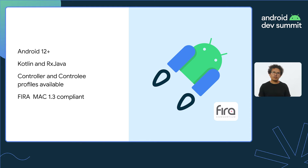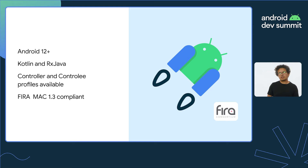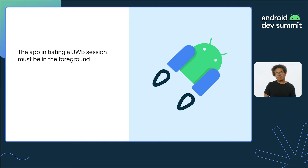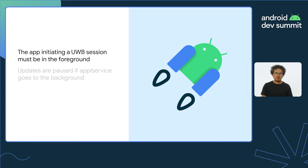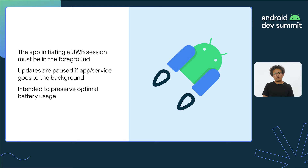FIRA is the group that coordinates companies working with UWB, and Google is an active member. MAC-13 is the spec that defines things like how the communication works, messaging format, encryption, etc. The library is compatible with FIRA MAC-13 compliant accessories. The library has a few restrictions: only foreground apps and services are allowed to start a new session, so if the app goes to the background, the client will no longer receive reports. But those will resume once the app or service moves back to the foreground. These constraints are there to preserve optimal battery usage, but may change in the future as we continue to improve the library.